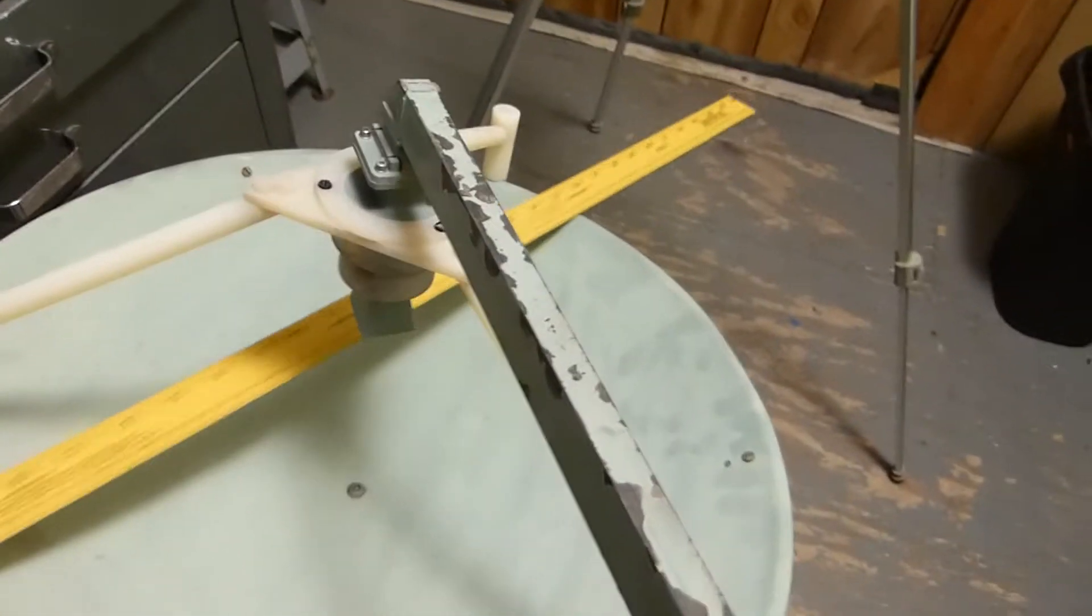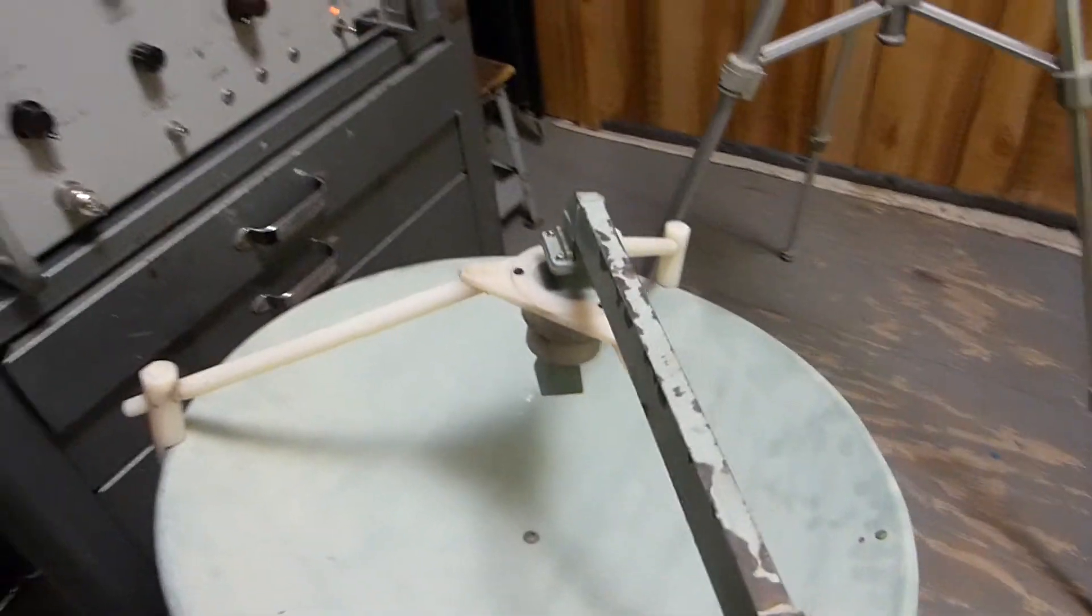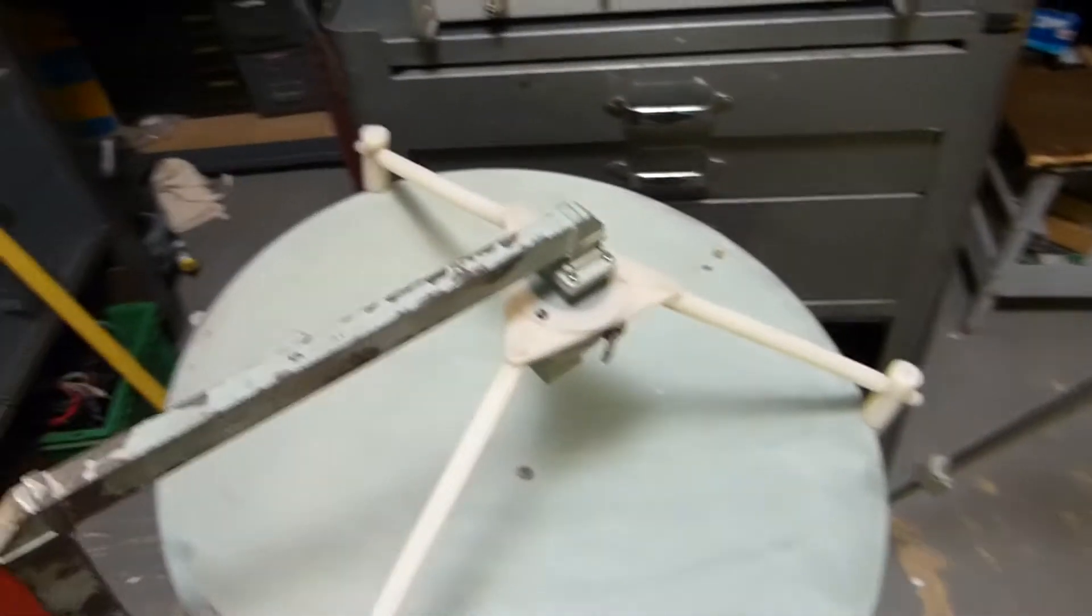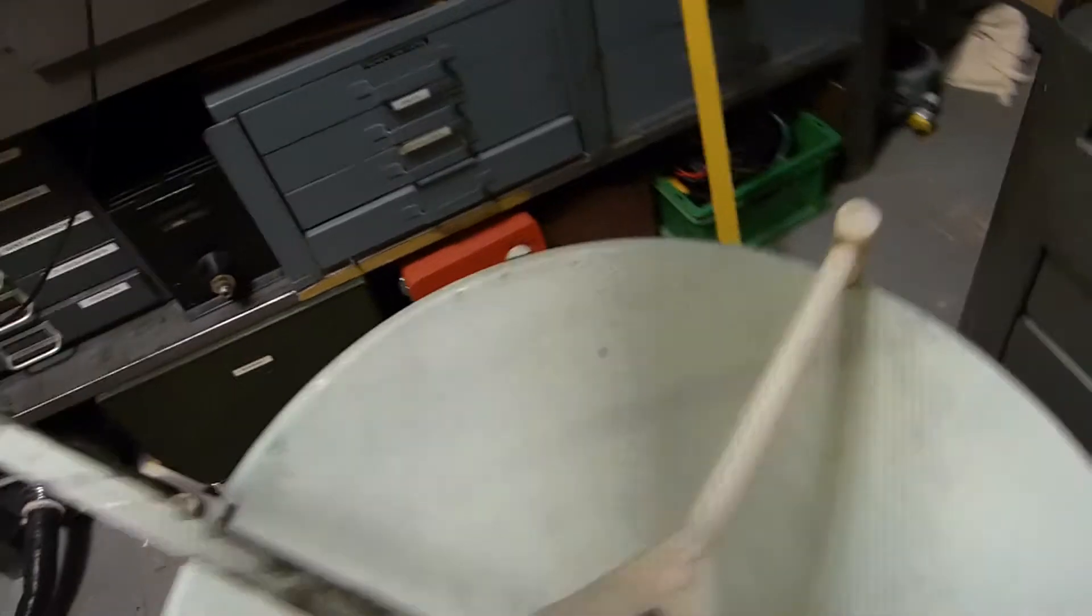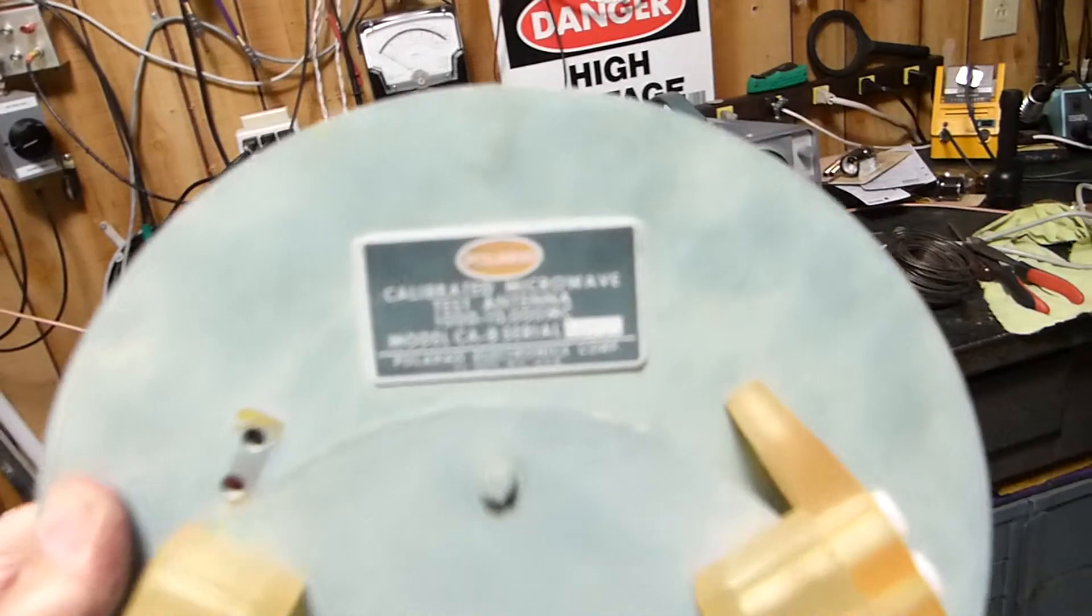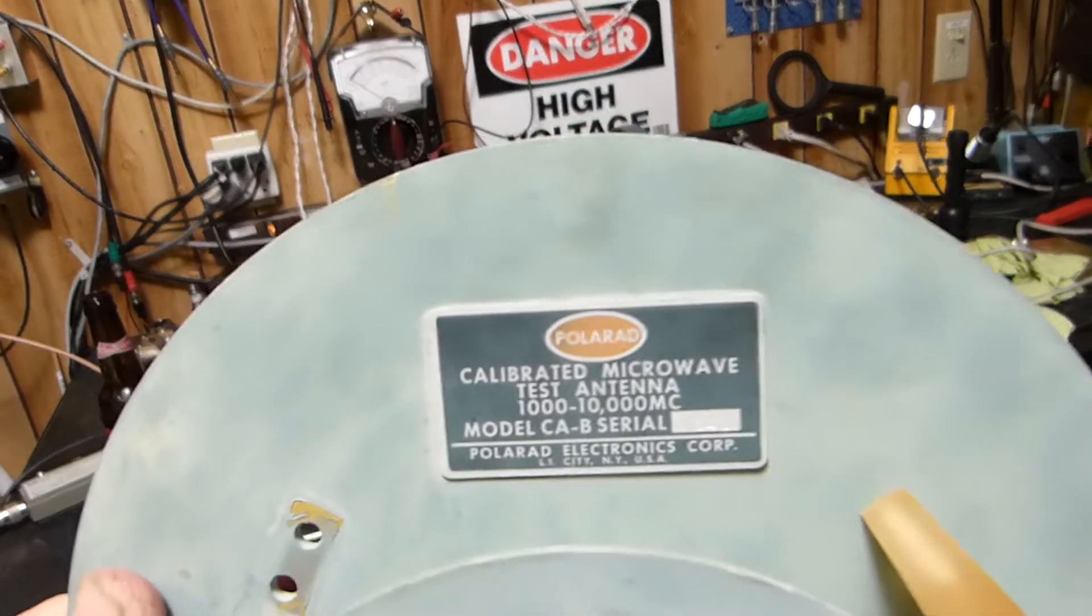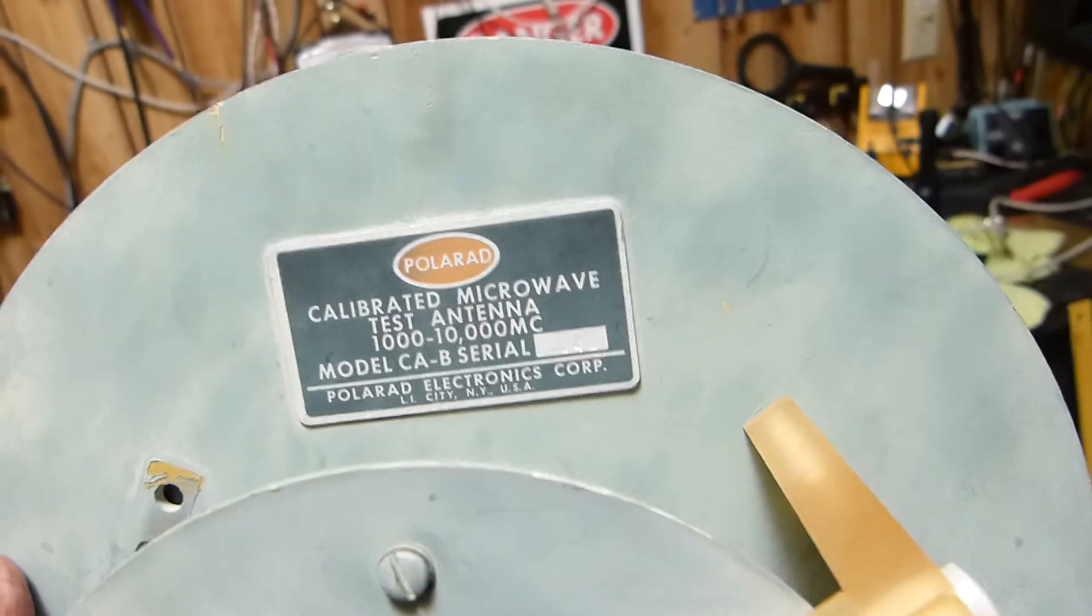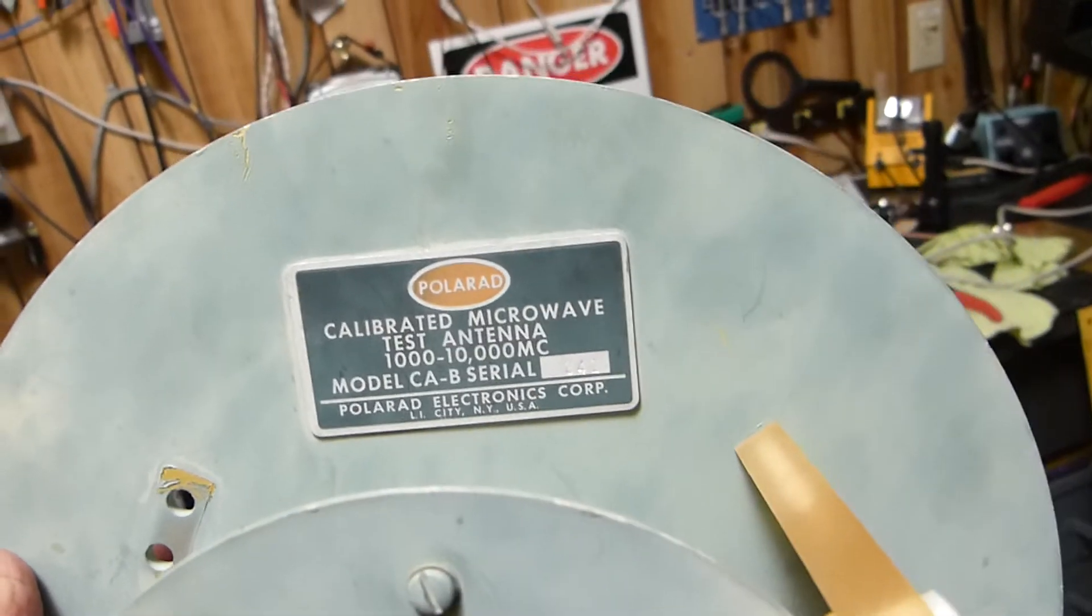picked up. These are made by Polarad. They're called reference antennas—precision calibrated microwave test antennas. This one goes from one gigahertz to ten gigahertz. It has this one little arm broken off. I've had all this apart. I'll explain this one to you in just a second.